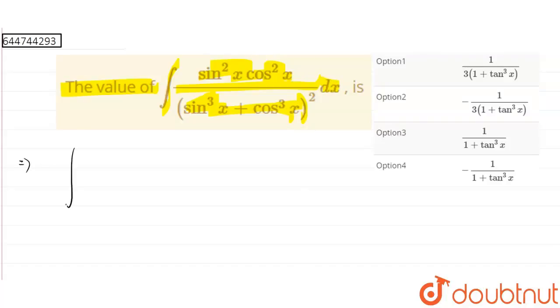What we'll do is write the equation first: integration of sin²x multiplied by cos²x dx divided by (sin³x + cos³x)² the whole square.